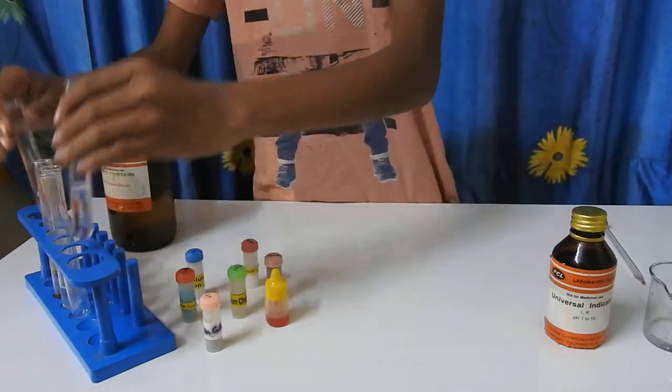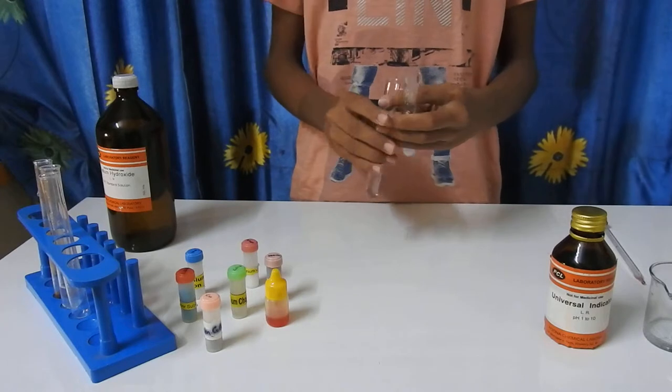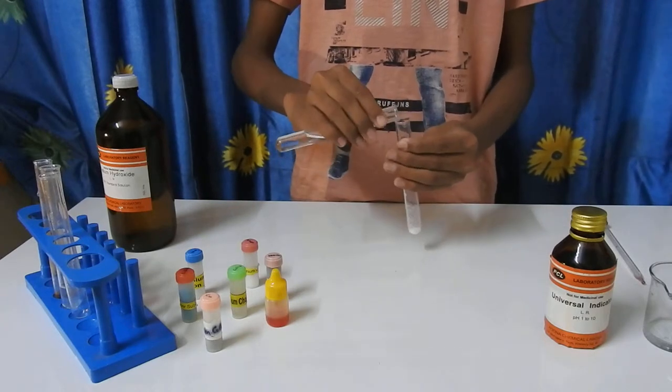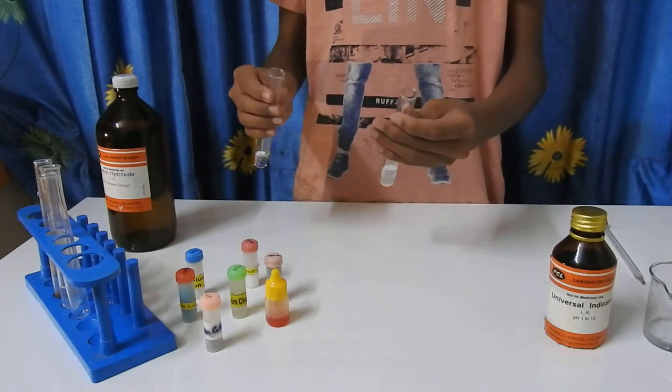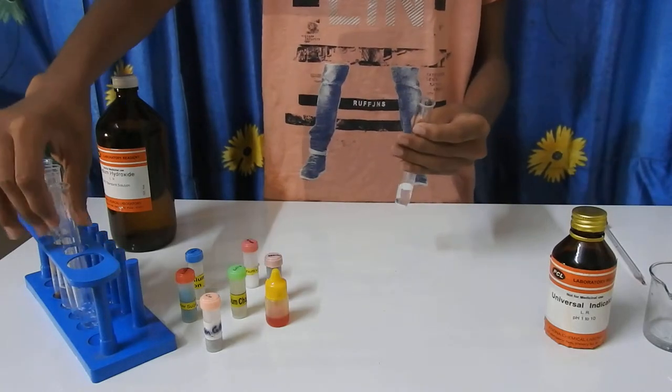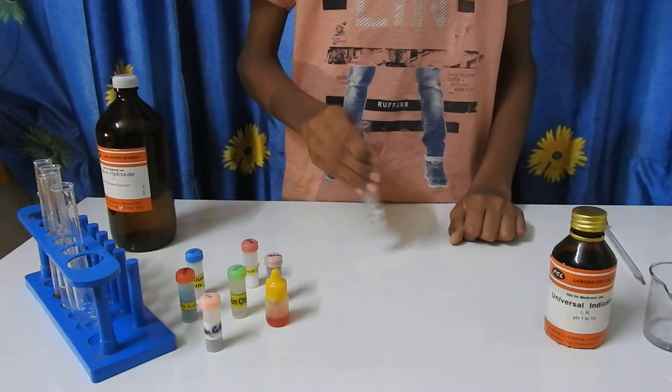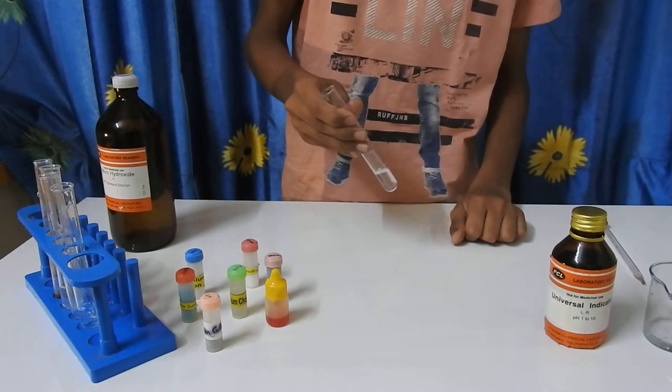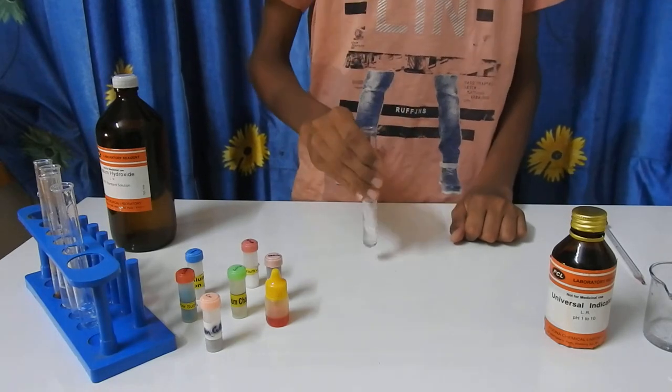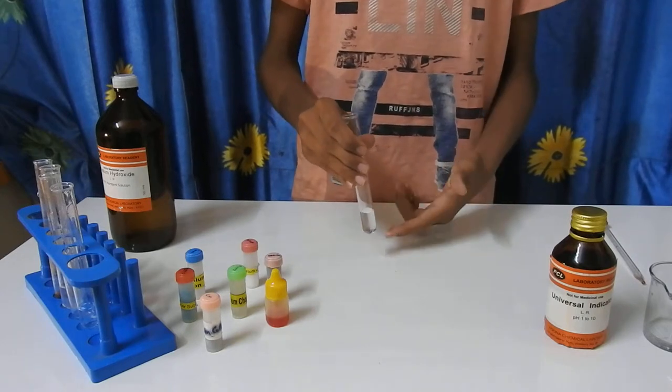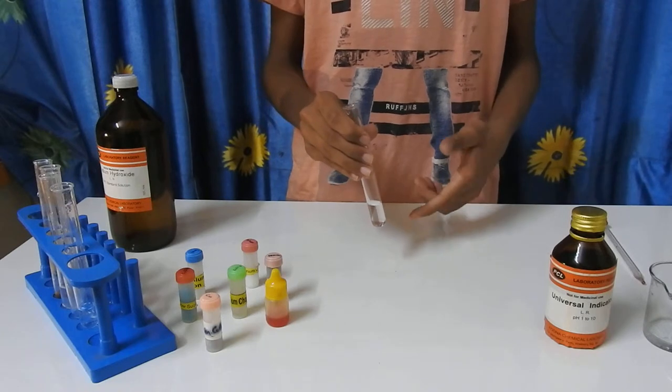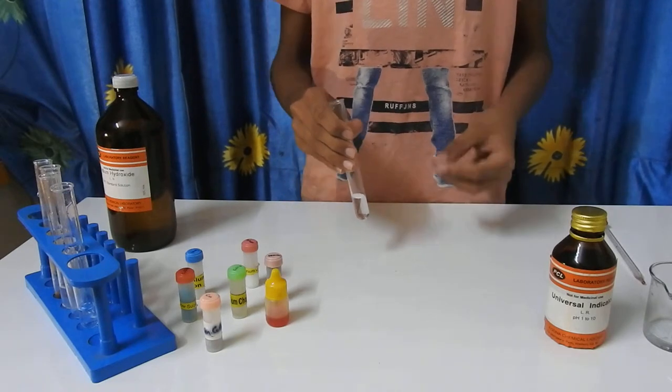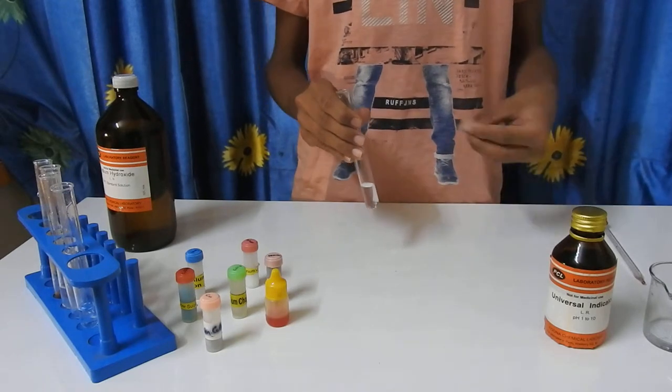Now let's mix the two chemicals. As you can see, the powder has disappeared, which means that the salt form is soluble in nature. According to our equation, it is NaCl, sodium chloride.